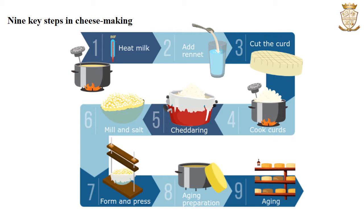The image shows: pre-treatment of raw milk where the milk is heated; addition of starter culture and rennet; cutting the curd; cooking the curd at 32 to 54 degrees Celsius; separation of the curd and whey followed by cheddaring; salting or brining and moulding; then forming and pressing the cheese into a required shape; followed by ripening or aging; and finally packing the cheese.